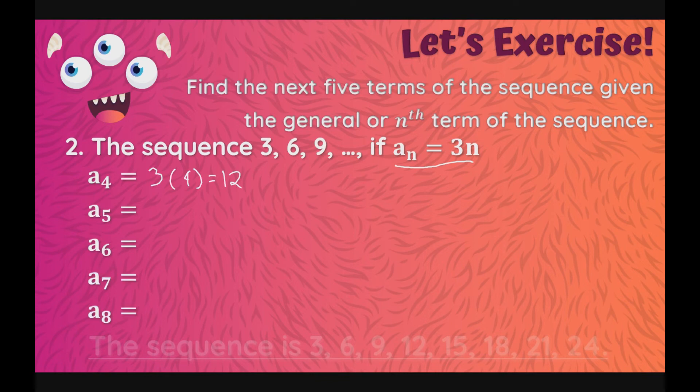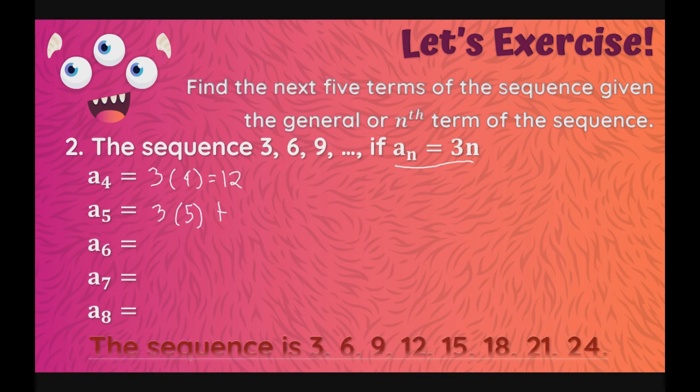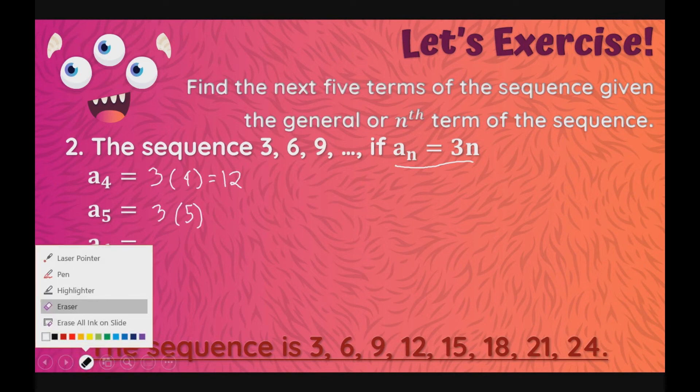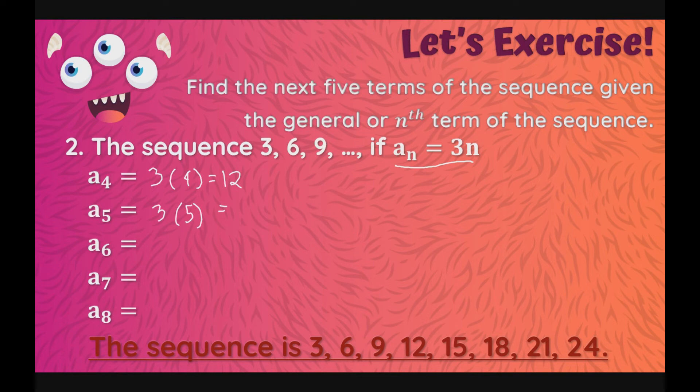a sub 5 hanggang a sub 8, ganoon din, same process. Magiging 3 times 5, this should be 3 times 5 is 15. While 3 times 6 for our 6th term will be equal to, very good, 18.